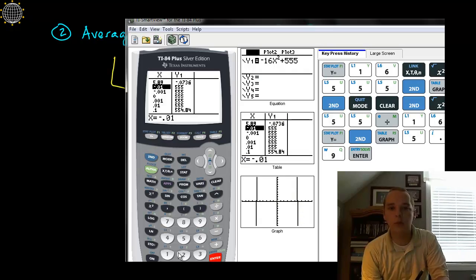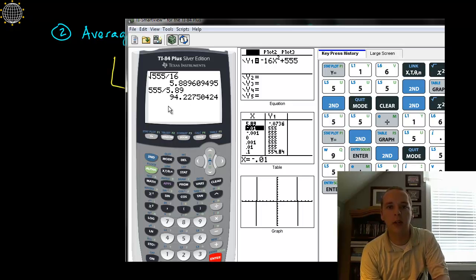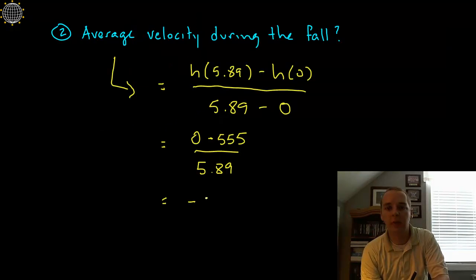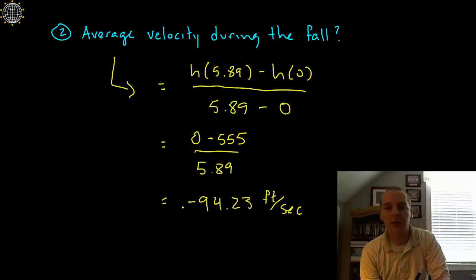So pull out our calculator here real quick. We'd have 555 divided by 5.89, and I'll change the sign of my answer here since I didn't put a negative in. That's -94.23 feet per second.